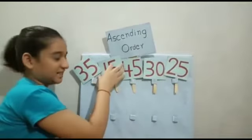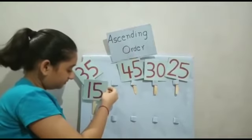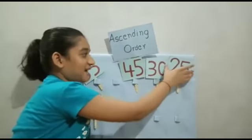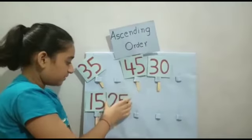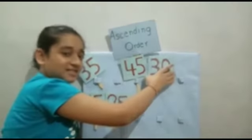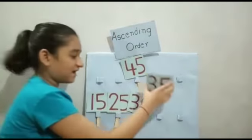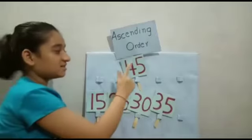15. Then, the smallest number is 25. Then, 35. And at last, 45.